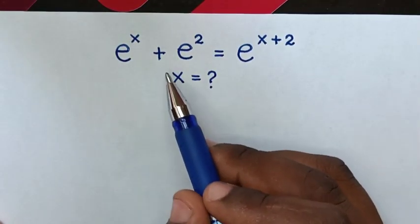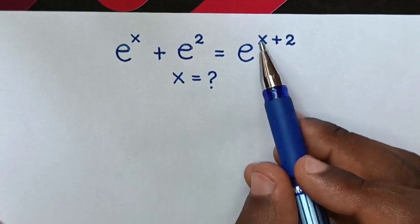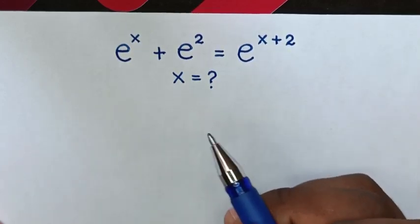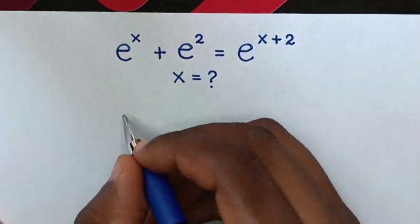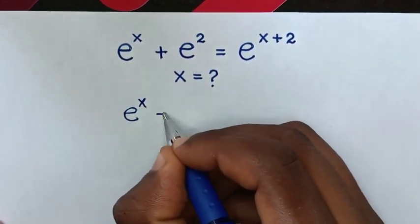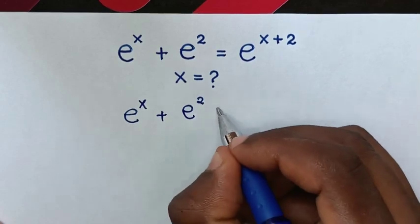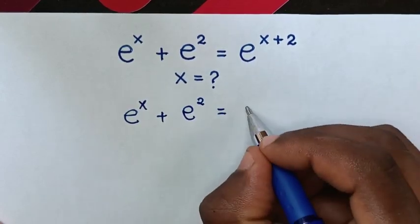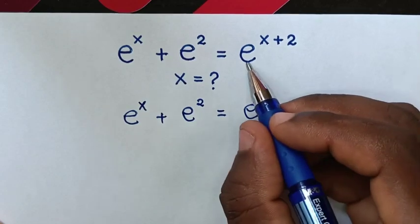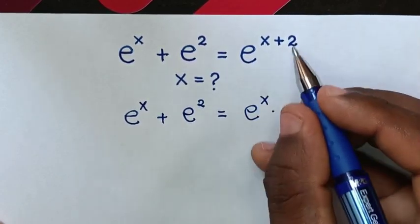We have e power x plus e power 2 is equal to e power x plus 2. To find the value of x, we note that e power of x plus 2 is the same as e power of x times e power of 2.